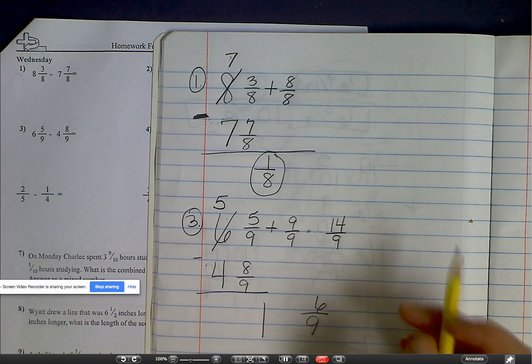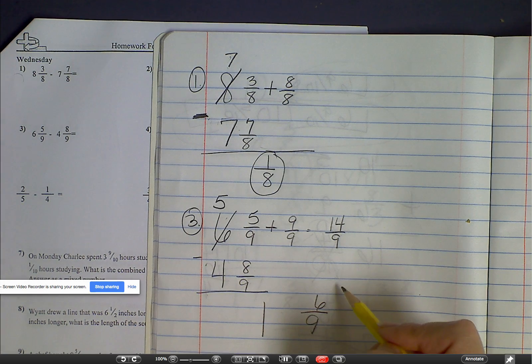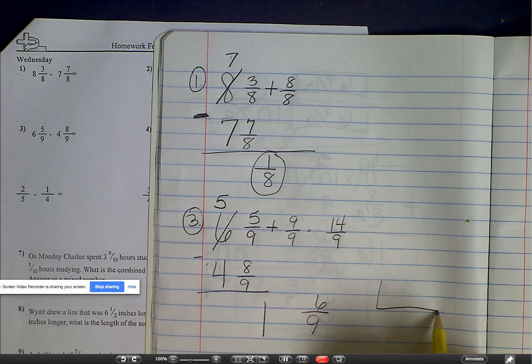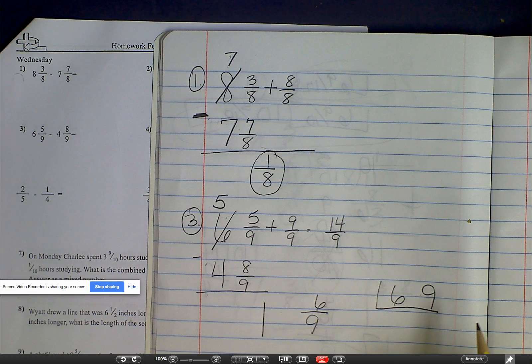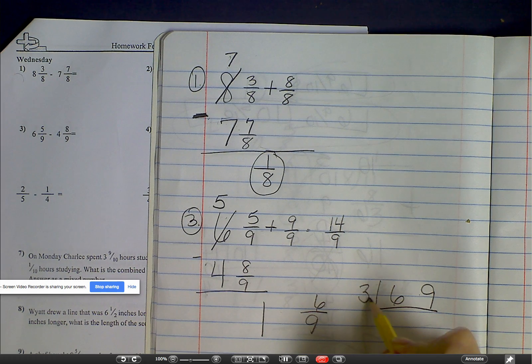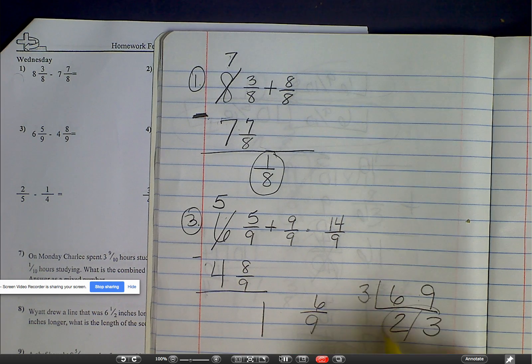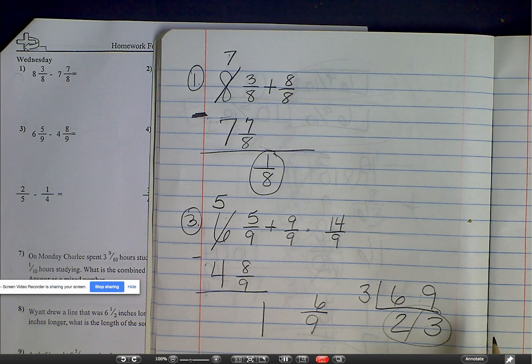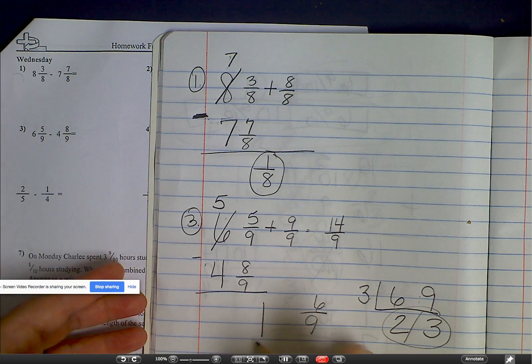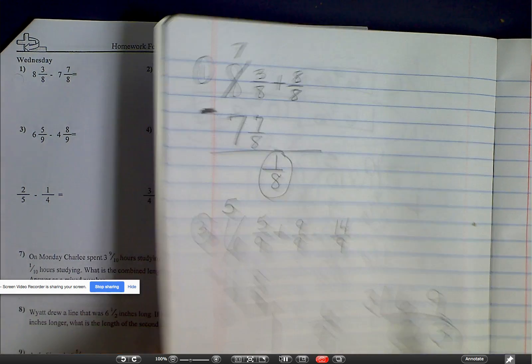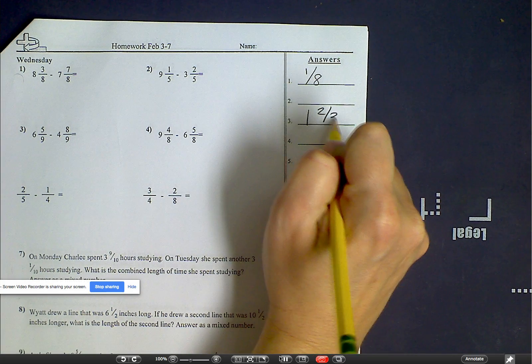But on this one, I'm not finished, because six and nine, I know they have, I can pull out a three. So I'm going to put six and nine in the ladder. Pull out a three. Three goes into six two times. Three goes into nine three times. Those are right next to each other on the number line. So the answer is one and two-thirds.